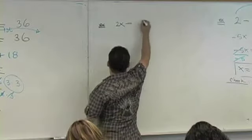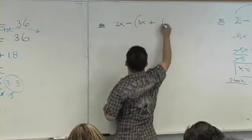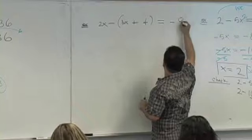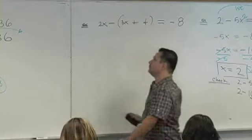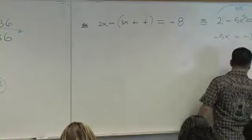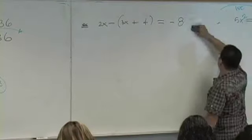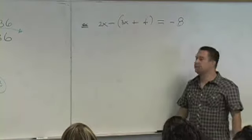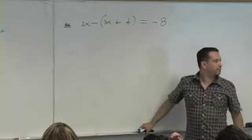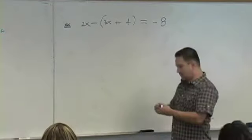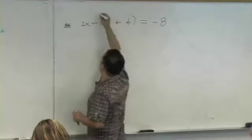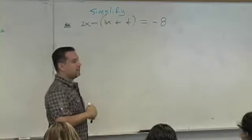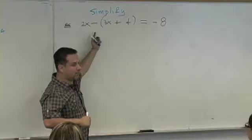What if you had 2x minus (3x + 4) equals maybe negative 8. So what would you have to do again? Simplify what? Simplify.